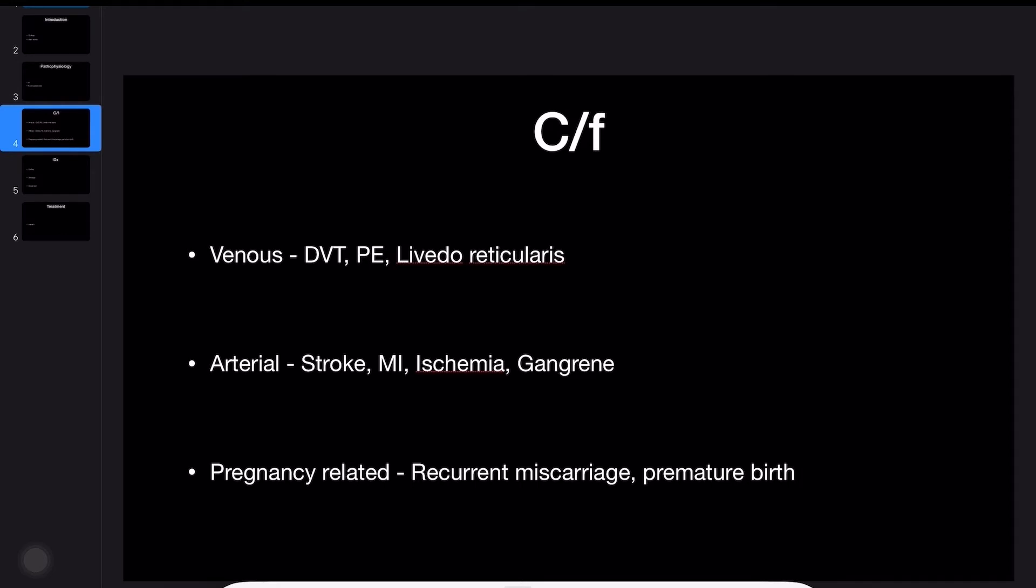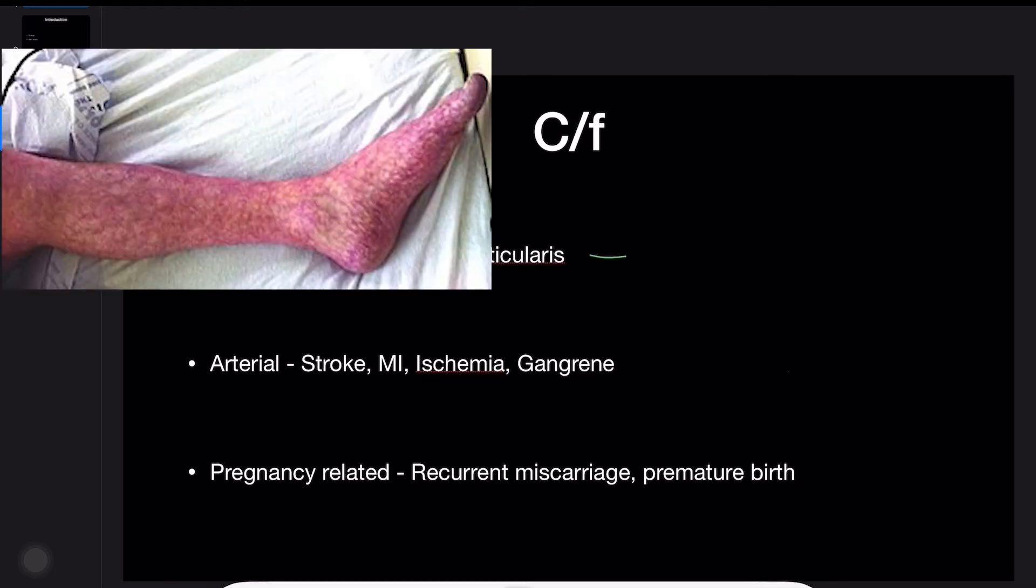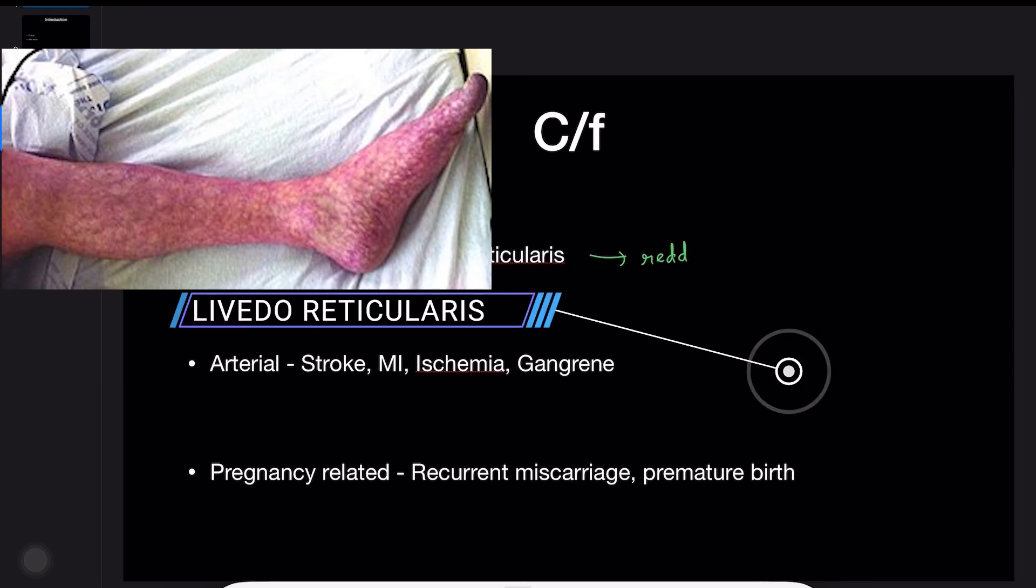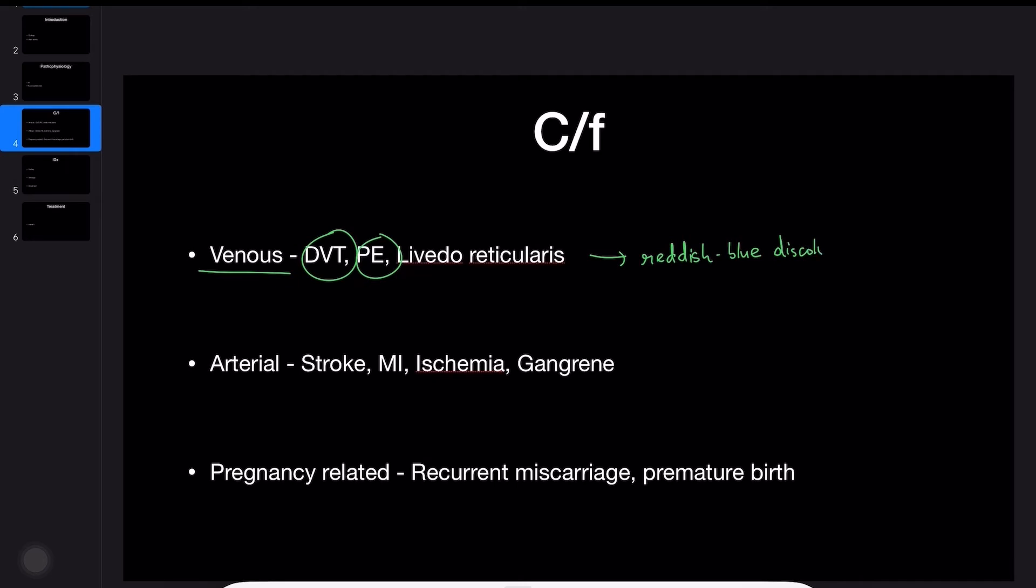Symptoms include relevant clotting episodes. In the venous circulation there will be deep vein thrombosis, pulmonary embolism may occur. Livido reticularis is a reddish-blue discoloration of the skin due to decreased blood flow through the region, which is kind of obvious given the widespread clotting which is occurring.